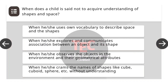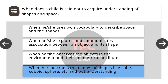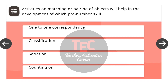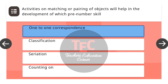Next question: When is a child said not to acquire understanding of shapes and space? The correct answer is when he or she cramps the names of shapes like cube, cuboid, sphere, etc. without understanding. Next question: Activities on matching or pairing of objects will help in the development of which pre-number skill? The correct answer is one-to-one correspondence.